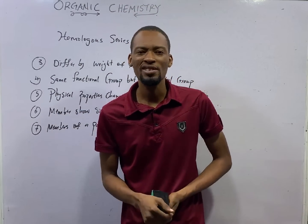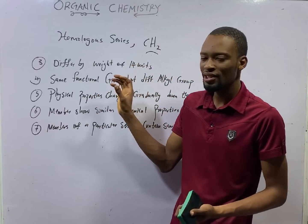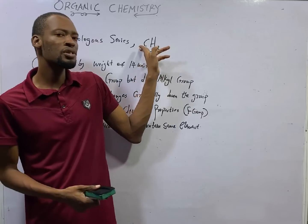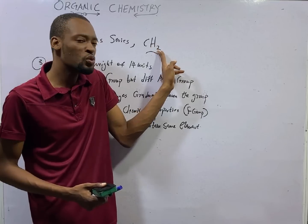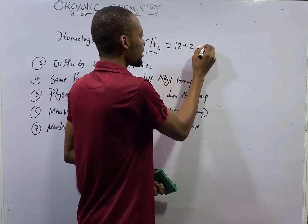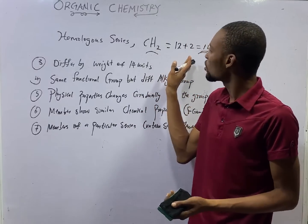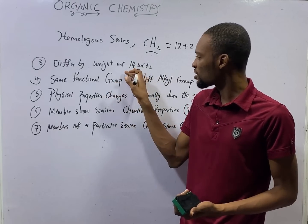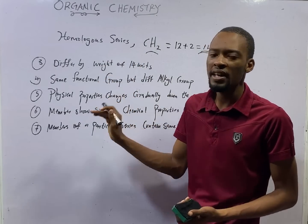Other properties of homologous series: successive members differ by a weight of 14 units. Look at this — if successive members differ by a CH₂ group, CH₂ is referred to as methylene. Carbon has a mass of 12, hydrogen 1 times 2. The mass of CH₂ is 12 plus 2, that is 14. So each successive member differs by a CH₂ group — or methylene — of 14 mass units. The next member will be 14 units heavier than the previous one.